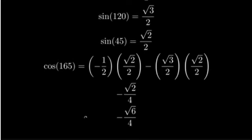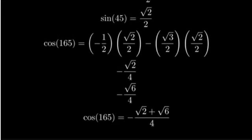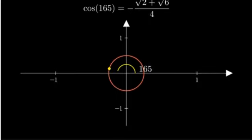Combining these terms, we get our final answer. Cosine of 165 degrees equals negative square root of 2 plus square root of 6 over 4. And there we have it! We've found the exact value of cosine of 165 degrees using the cosine addition formula.